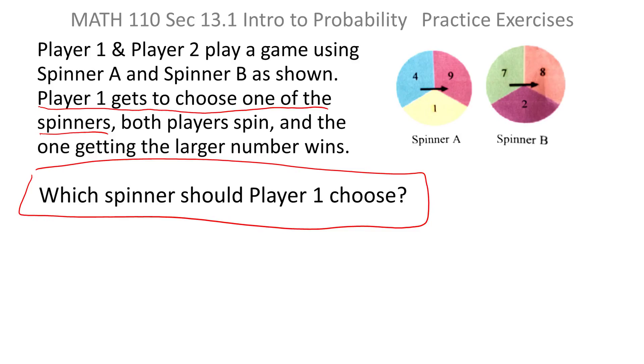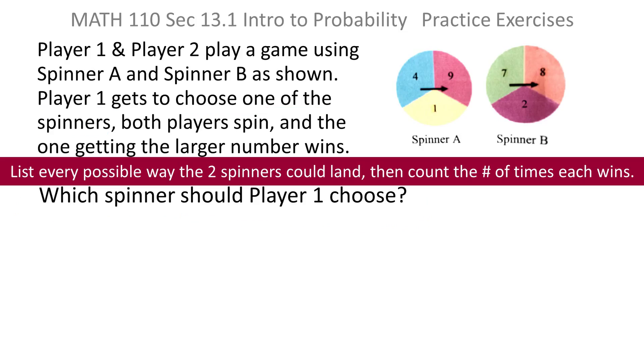Obviously spinner A doesn't win all the time, spinner B does not win all the time. There has to be some way of deciding which is the best. My suggestion is to list out every possible way the spinners could land, any combination, and then count how many times each spinner wins. That should give you the information you need to make the right decision.